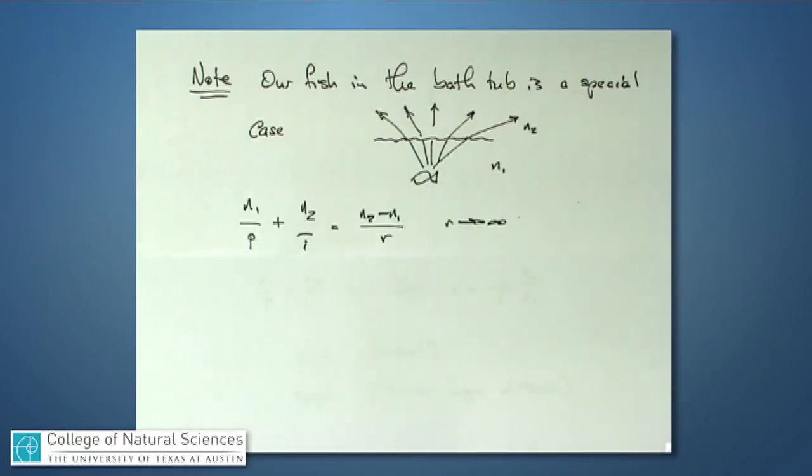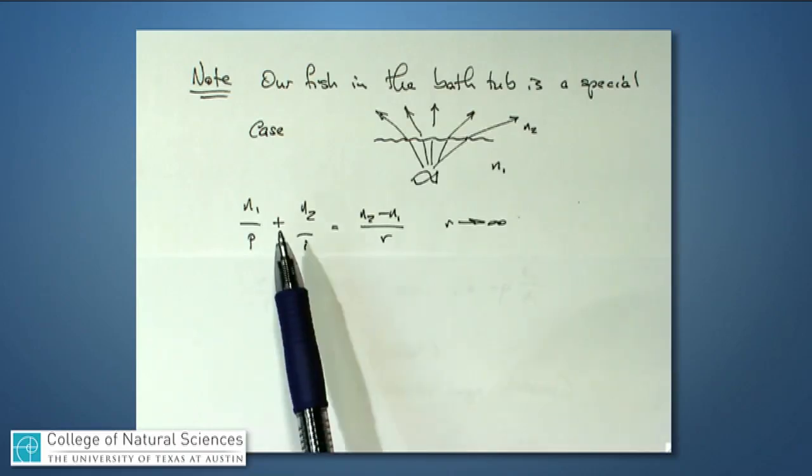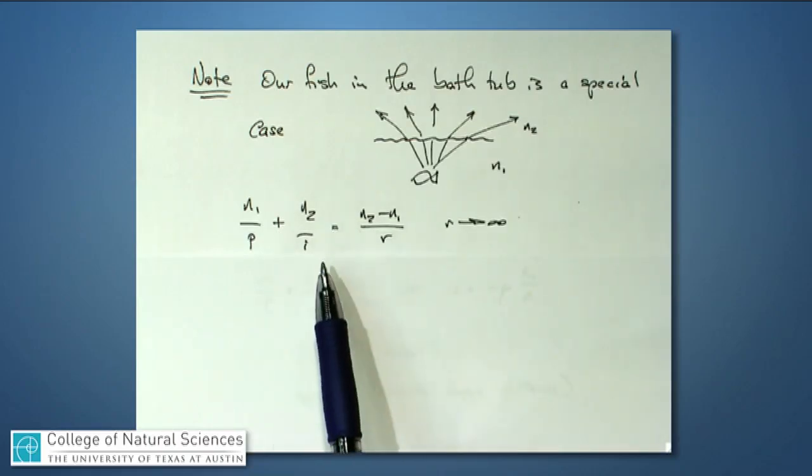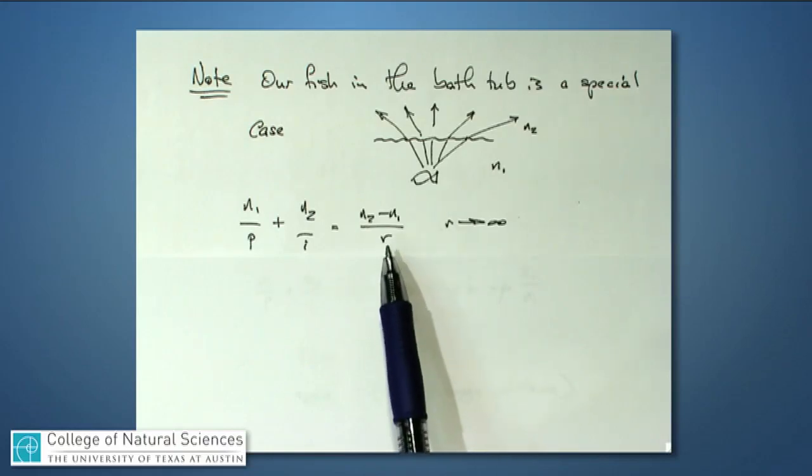So we're going to go back to our expression N1 over P plus N2 over I is N2 minus N1 over R, except we're going to let R go to infinity. An object that's perfectly flat is approximately a spherical object where the radius is infinitely far or infinitely large. Just like we think the Earth is flat because we're standing on it and we don't see the curvature of the Earth, but that's just because R is really big, the radius of the Earth is really big compared to us.